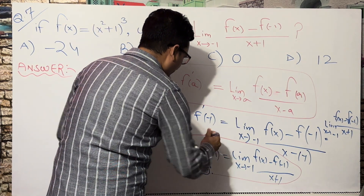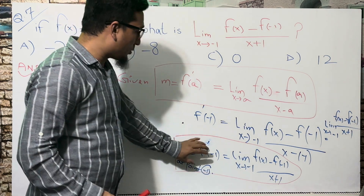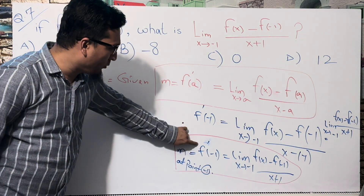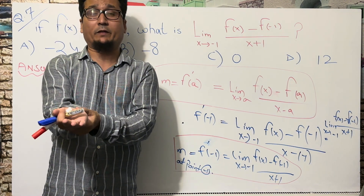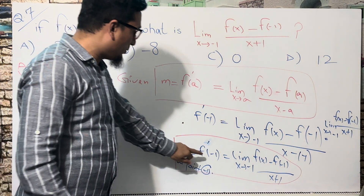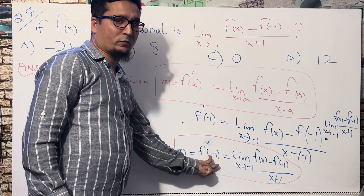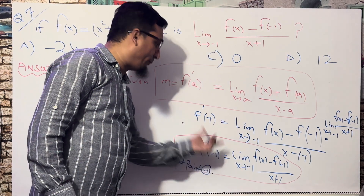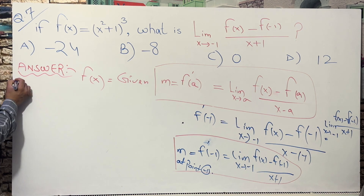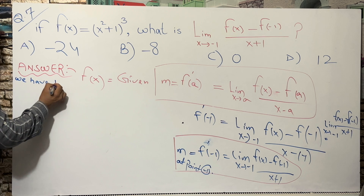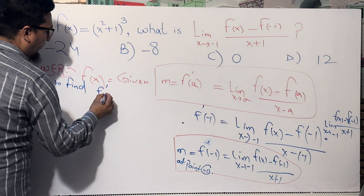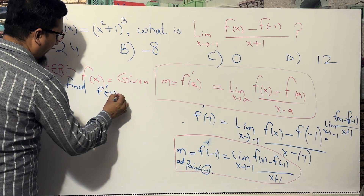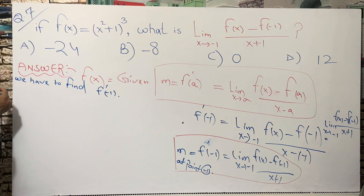So to solve this, we need to find f′(−1). First find the derivative f′(x), then substitute x = −1. That is what we have to find: f′(−1).